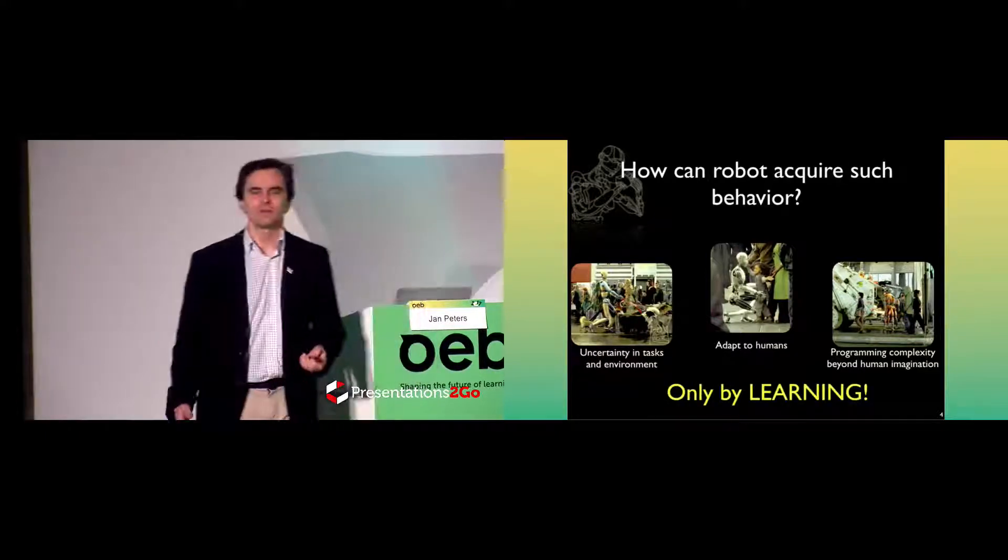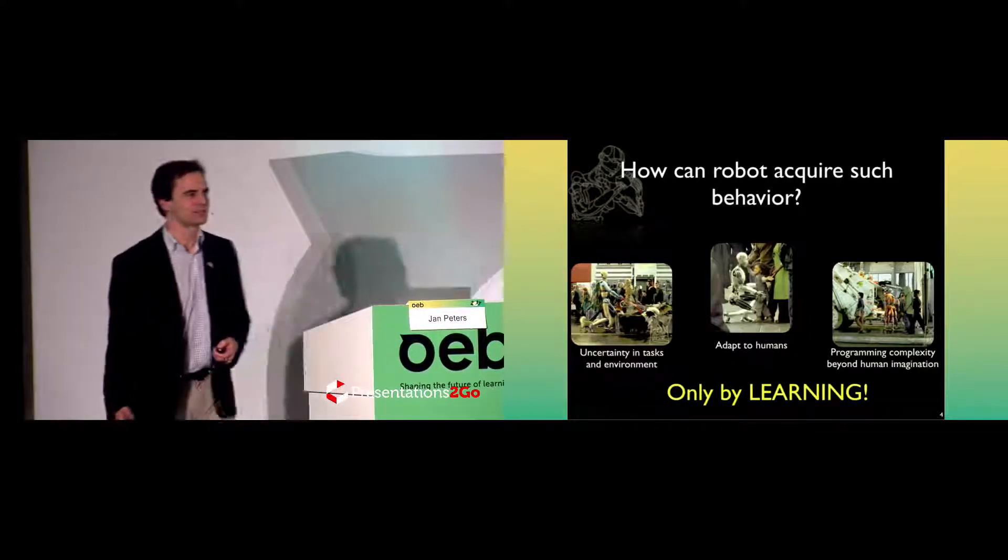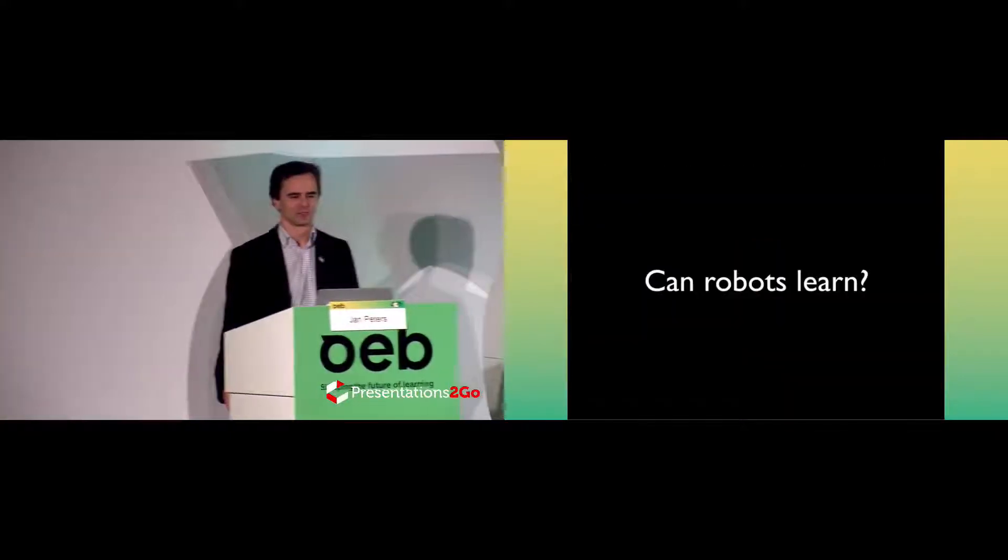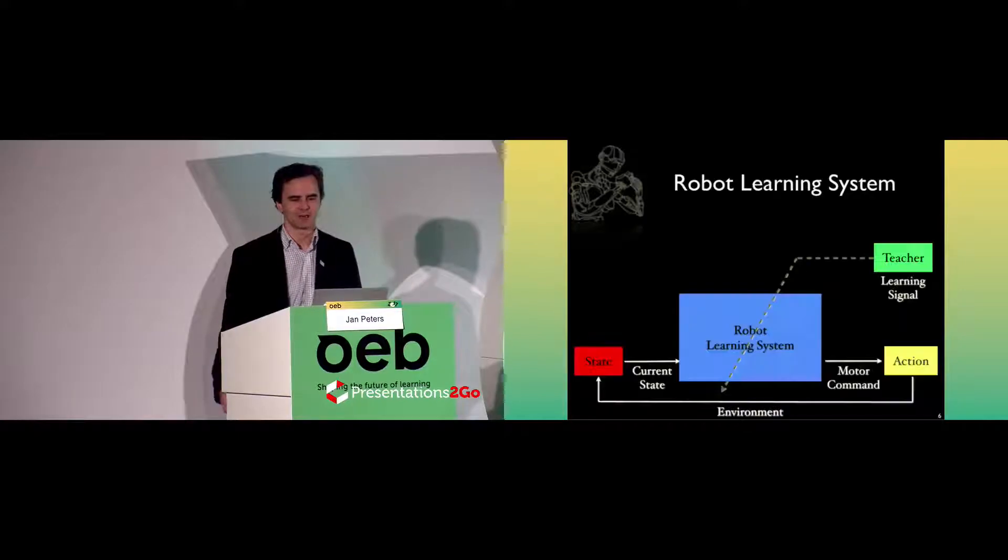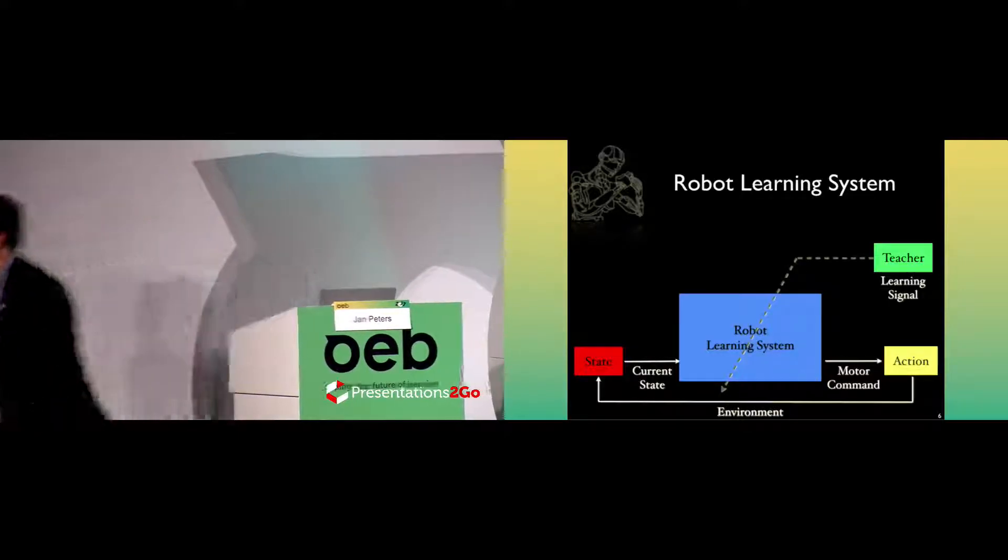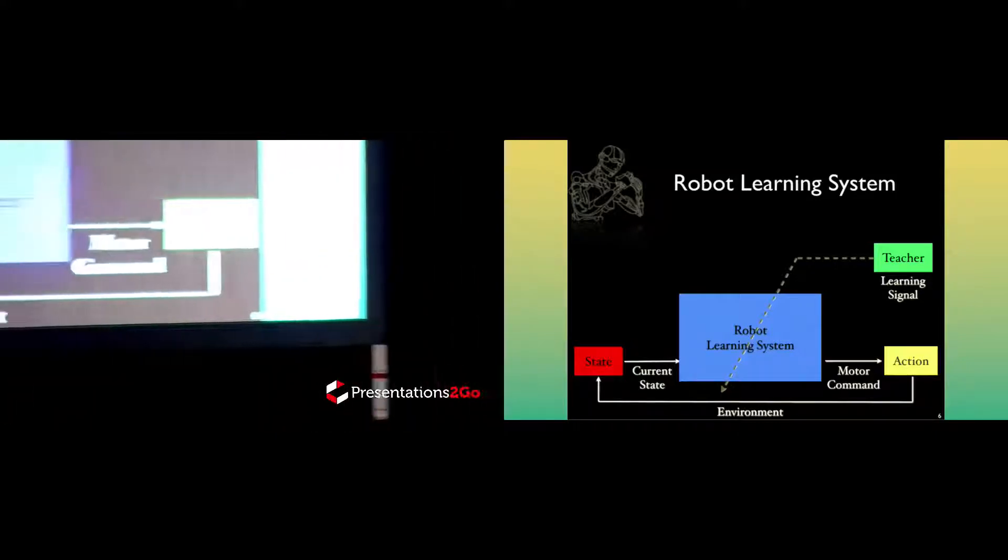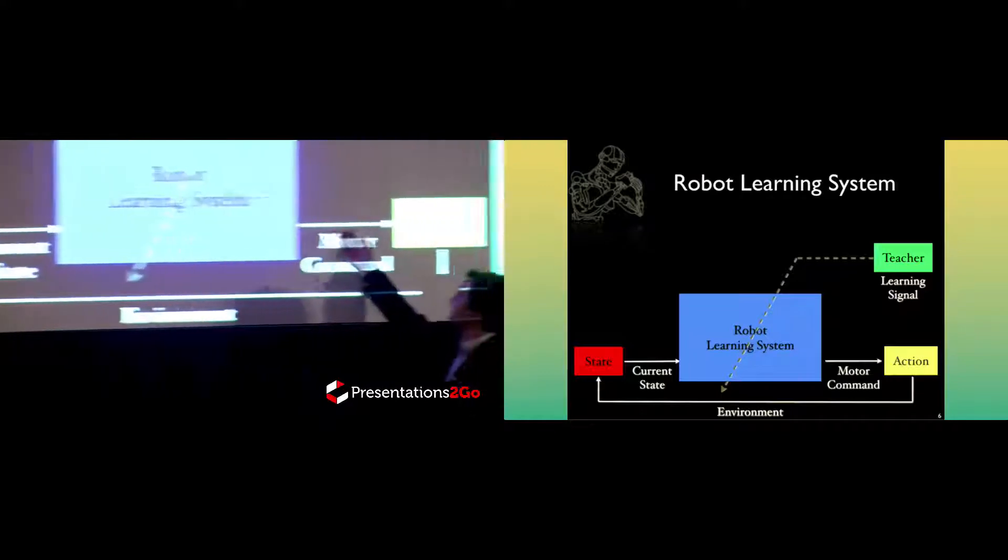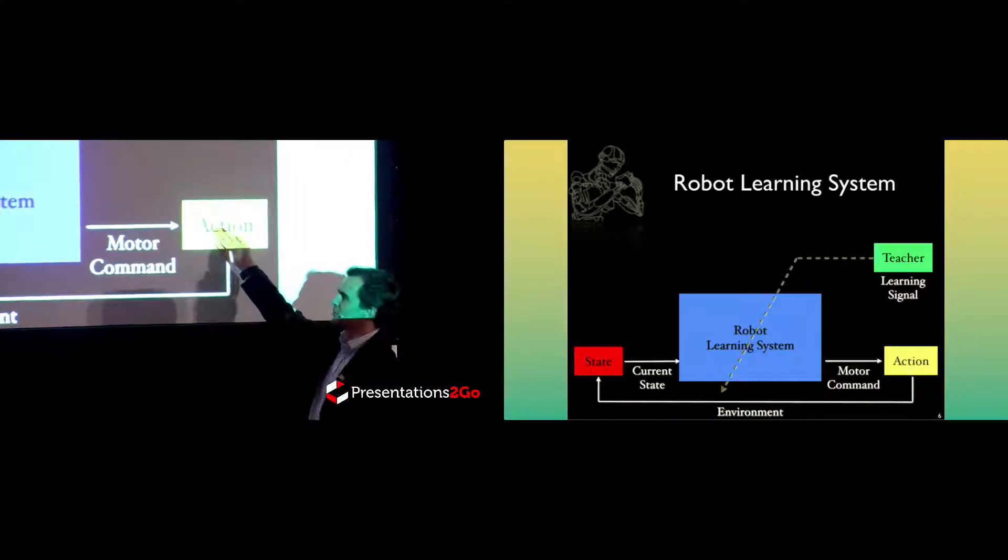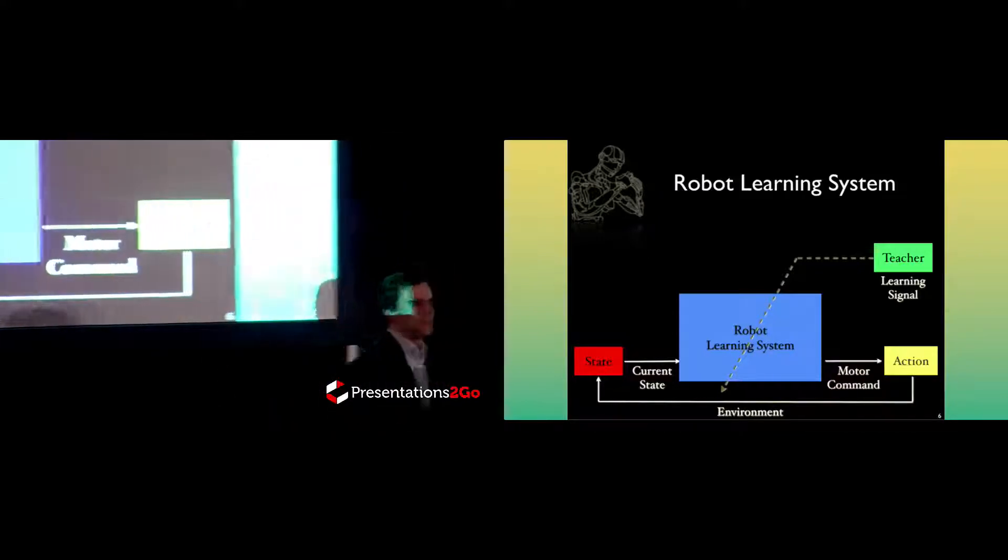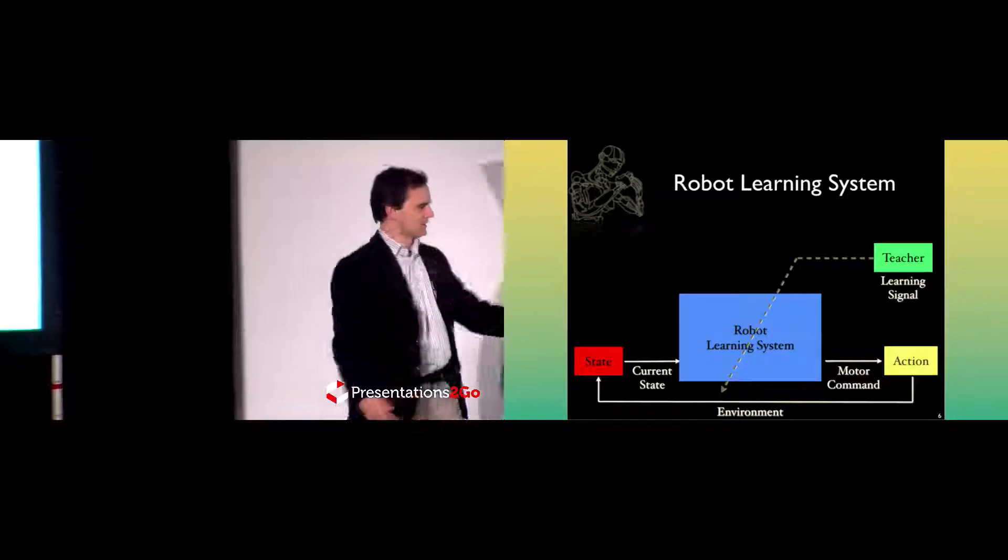Quite clearly, we need learning here. And in this case, I mean machine learning instead of human learning. So can robots learn? Let's start with a quick view of what a robot is. A robot in the end is in a state which is perceived through its sensors, and it will change the state by sending actions or motor commands. In addition to that, we have a teacher, and this teacher gives our robot a learning signal.